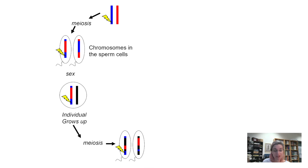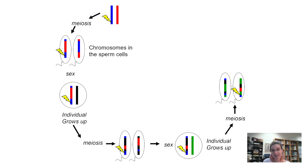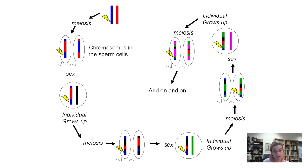The individual grows up, meiosis occurs with more recombination — notice where that mutation is following. Then sex with a green chromosome, and meiosis again. That mutation has moved over, so you have just this tiny little part of the blue chromosome left because of recombination, but that mutation is still being carried down. Then sex with a pink chromosome, individual grows up, meiosis — and on and on. You have this constant reshuffling going on.